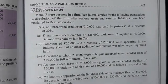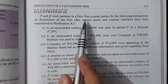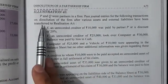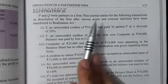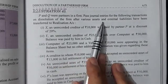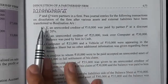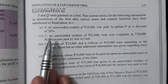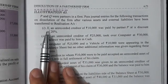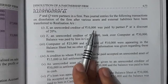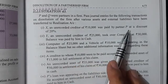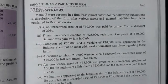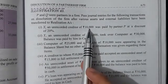Illustration 43: P and Q were partners in a firm. Pass journal entries for the following transactions on dissolution of the firm, after various assets and external liabilities have been transferred to the realization account. Transaction (a): X, an unrecorded creditor of 10,000, was paid by partner P at a discount of 20%.